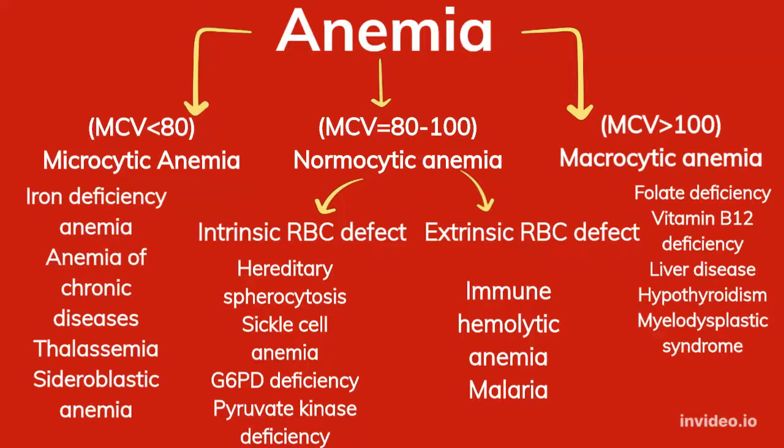Extrinsic RBC defects could be present in conditions like autoimmune hemolytic anemia and malaria. If the MCV value is more than 100 cubic micrometers and you have anemia, then it is macrocytic anemia. In macrocytic anemia, the size of RBCs are very large, but they are immature RBCs which are not functional, and so you have anemia. The causes for this are folate deficiency anemia, vitamin B12 deficiency, liver disease, hypothyroidism, and myelodysplastic syndrome.